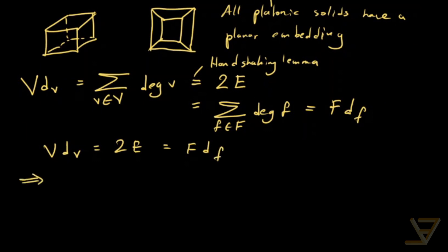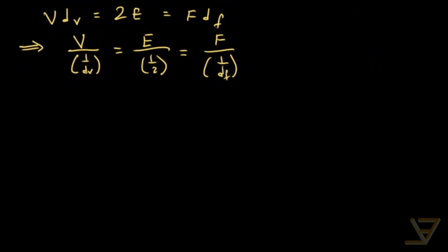And I'm just going to write this in a slightly different form, which is V over 1 over DV. You'll see why this is useful in a second. Now we've got these proportions here. Something I want to remind you of from the theory of proportions is that if we have A over B is equal to C over D, then we find that A over B is equal to C over D is equal to A plus C over B plus D is equal to A minus C over B minus D, as long as we're never dividing by zero.